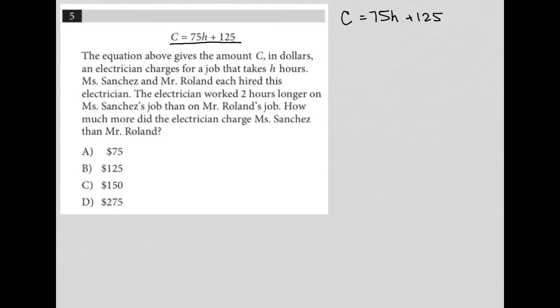The question says the equation above gives the amount C in dollars an electrician charges for a job that takes H hours. Let's make sense of that. It sounds like the electrician is making $75 per hour, because we see the 75 is multiplied by the number of hours.